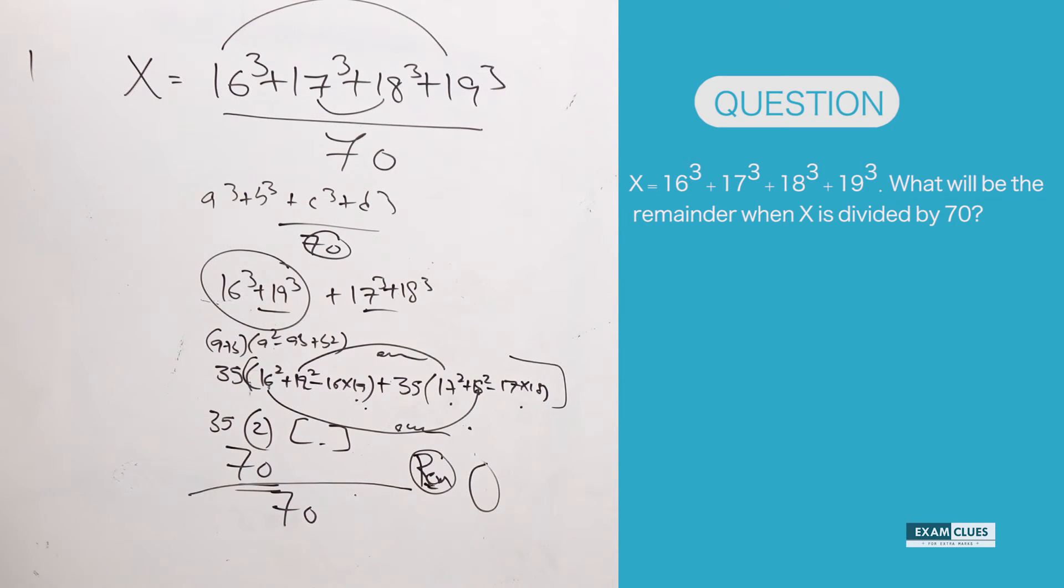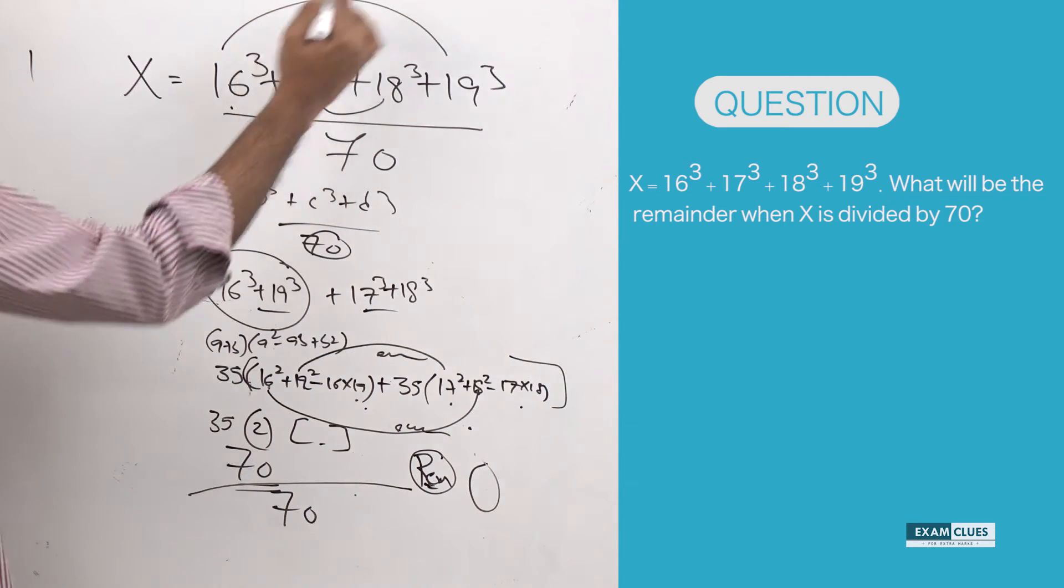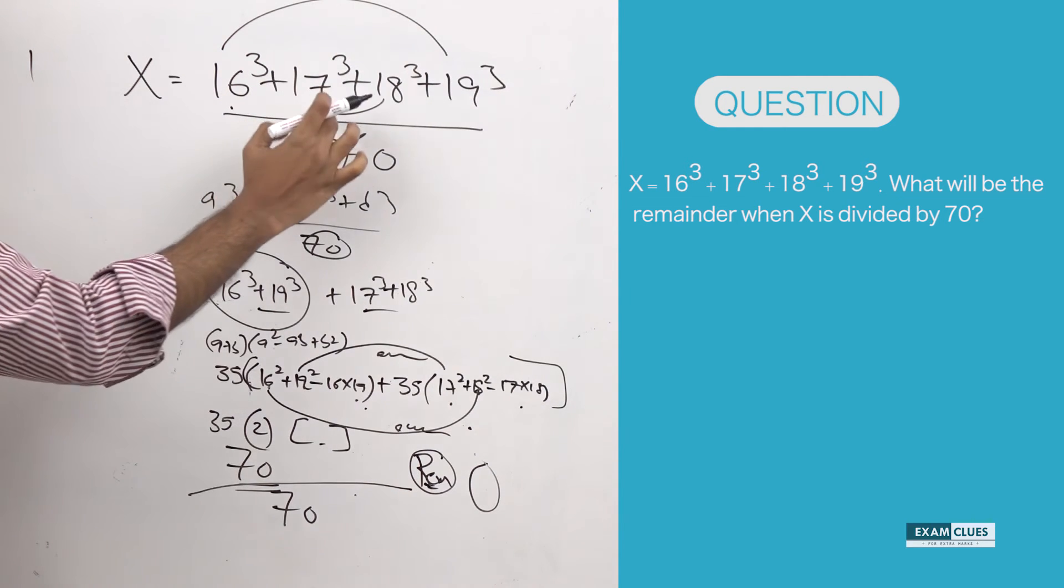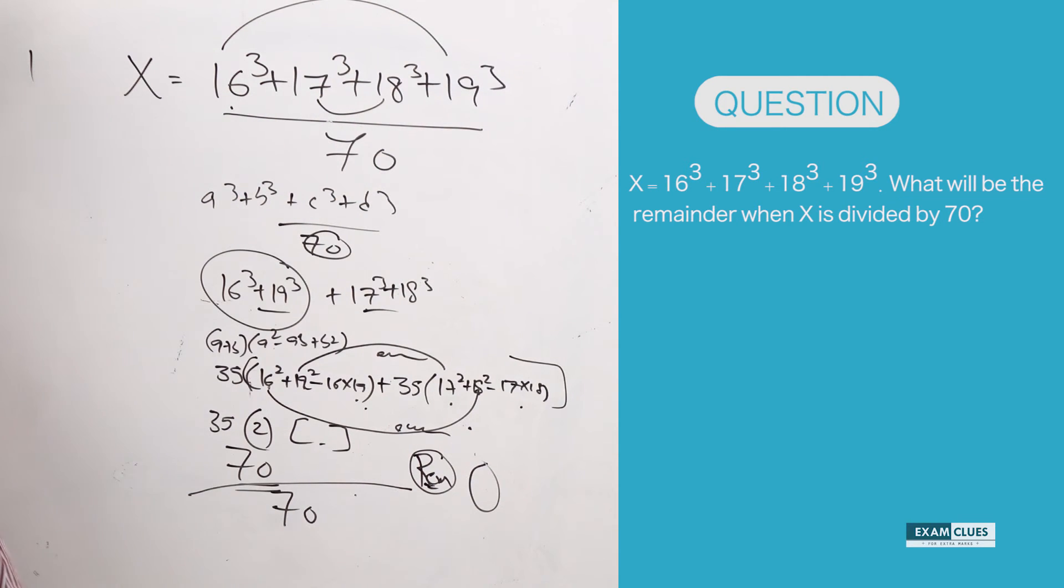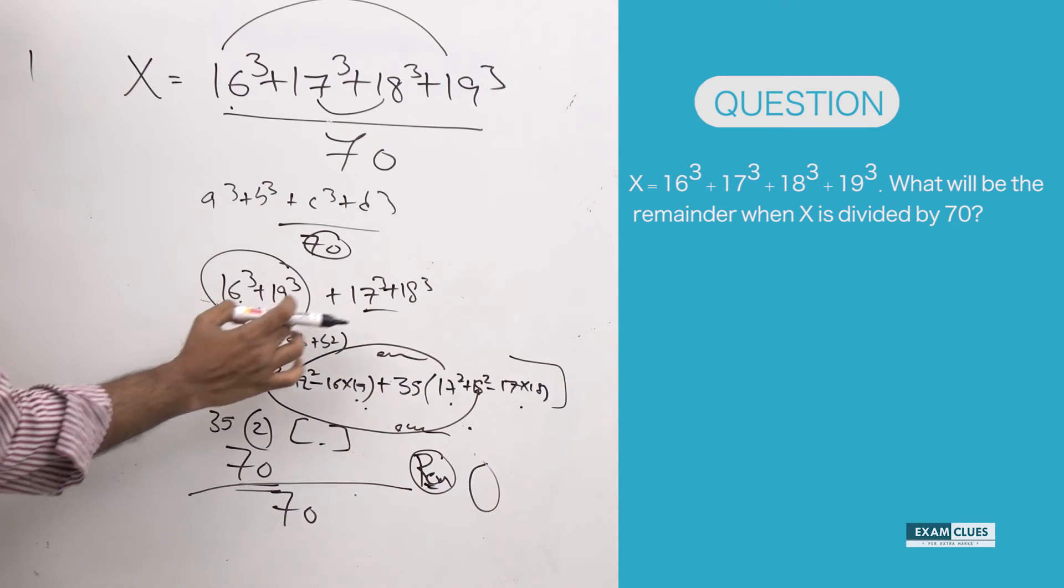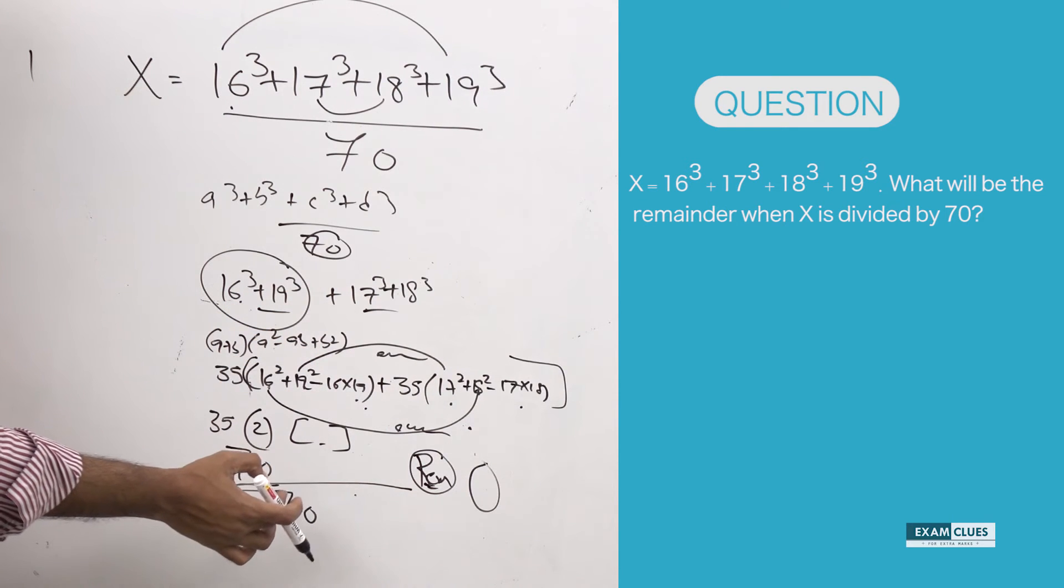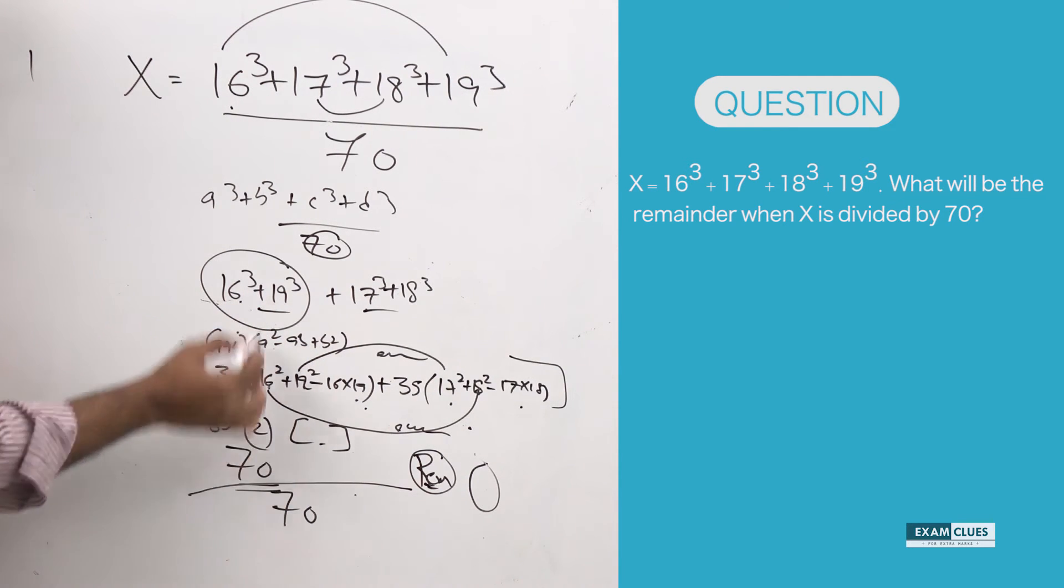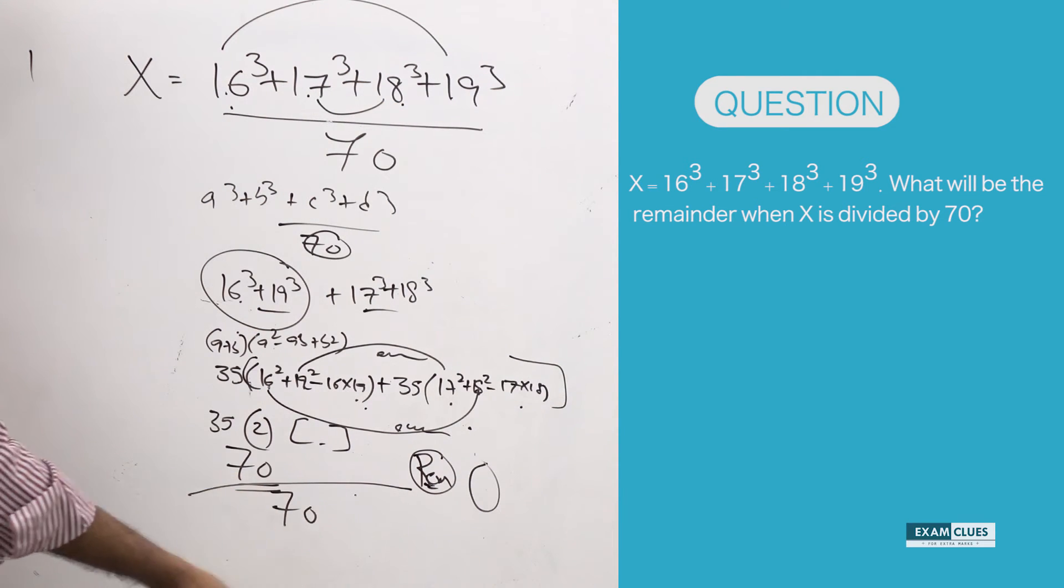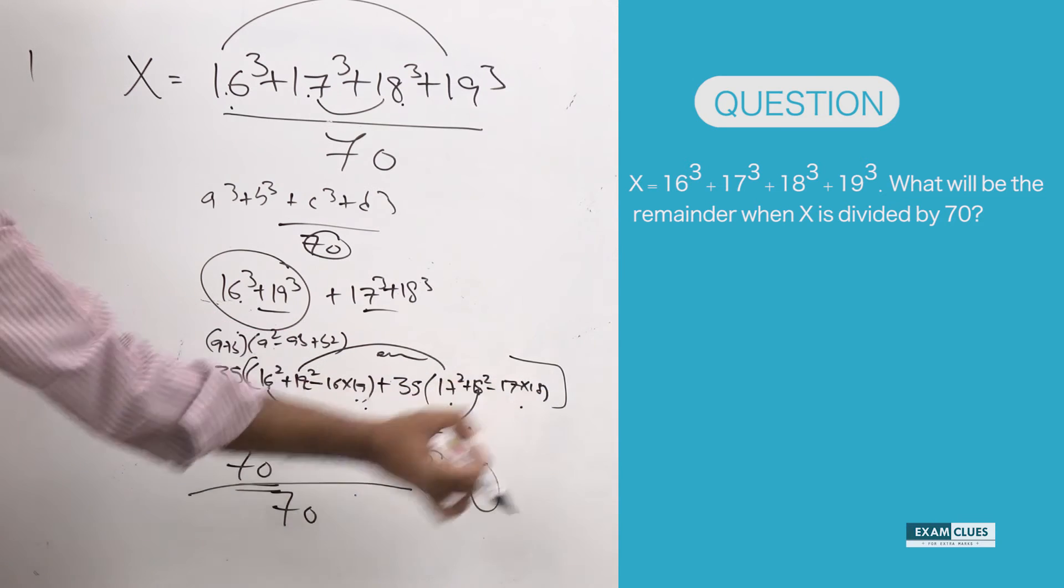I can write this as 16 cube plus 19 cube and 17 cube plus 18 cube. When I am writing it that way, this is nothing but A plus B into A square minus AB plus B square. So I have just added 16 and 19, I got 35. 17 and 18, I added 35 into some number into another number.